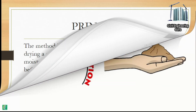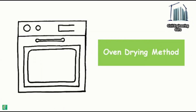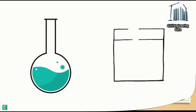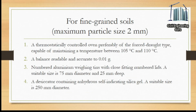Apparatus for fine grained soils: a thermostatically controlled oven, preferably of the forced draft type, capable of maintaining a temperature between 105°C and 110°C; a balance readable and accurate to 0.01 grams; numbered aluminium weighing tins with close-fitting lids, a suitable size being 75 millimeters diameter and 25 millimeters deep; and a desiccator containing anhydrous self-indicating silica gel, suitable size 250 millimeters diameter.